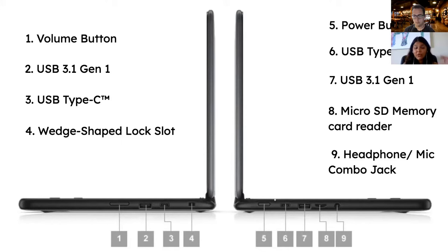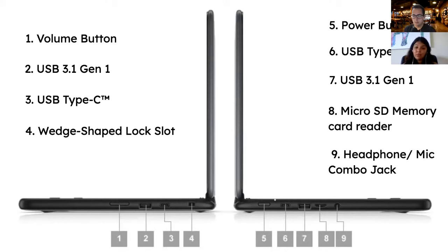On the left side of the Chromebook, the power button is on the side of teacher and 9–12 Chromebooks. Then there's another USB Type-C, meaning you can charge from either side depending on where the outlet is. Then there's another regular USB port for a thumb drive, a micro SD card reader, and a headphone and mic combo jack for earbuds.